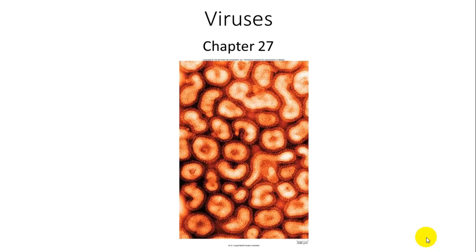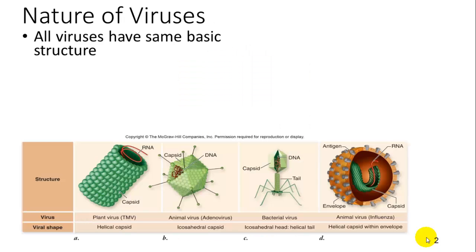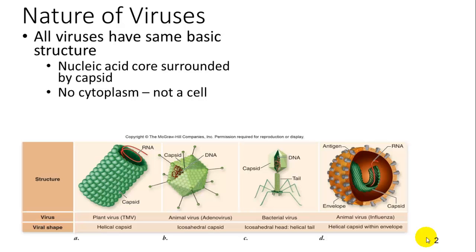We're going to get into some microbiology, talking about microscopic organisms, specifically viruses and bacteria. The nature of viruses is that they all have the same basic structure, which is much more simple than the cells we have been looking at up to this point. They are composed of a nucleic acid core, which is either DNA or RNA, surrounded by a protein capsid.